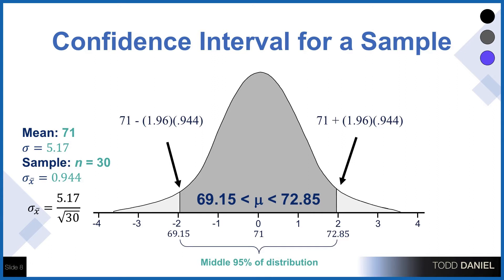In this example, the values for the normal curve are a mean of 71, a standard deviation of 5.17, and a sample size of 30. We use sigma divided by the square root of n to calculate the standard error of the mean. We then multiply the standard error by 1.96 and either add or subtract it from our point estimate — the mean — to give us the 95% confidence interval.